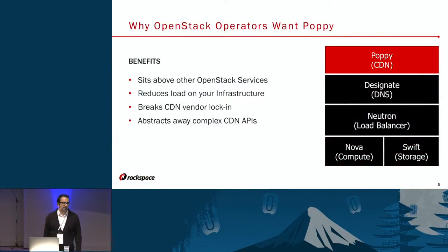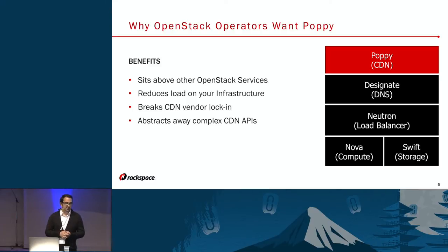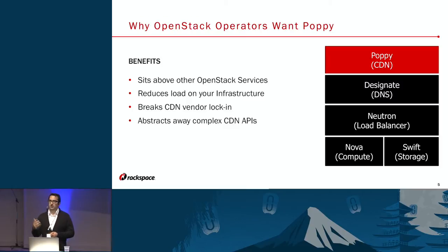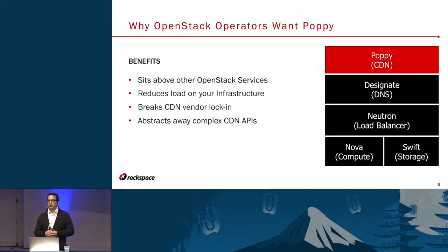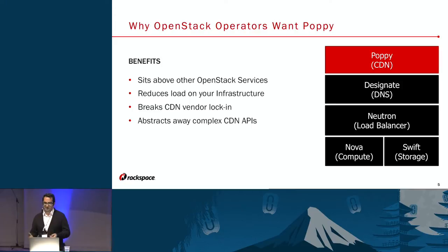I'm going to go through some benefits to the different groups that Poppy is attractive to. The first one is OpenStack operators — the people that operate an OpenStack Cloud. Some of the benefits: it sits above other OpenStack services, so it's not going to be invasive to the infrastructure you're already running. It runs almost as a platform-as-a-service on top of what you already have. CDN will reduce load on your infrastructure — why have all the requests going back to your Nova instances, saturating your networks, when you can take static assets that can be cached on the CDN and just put it on the edge?